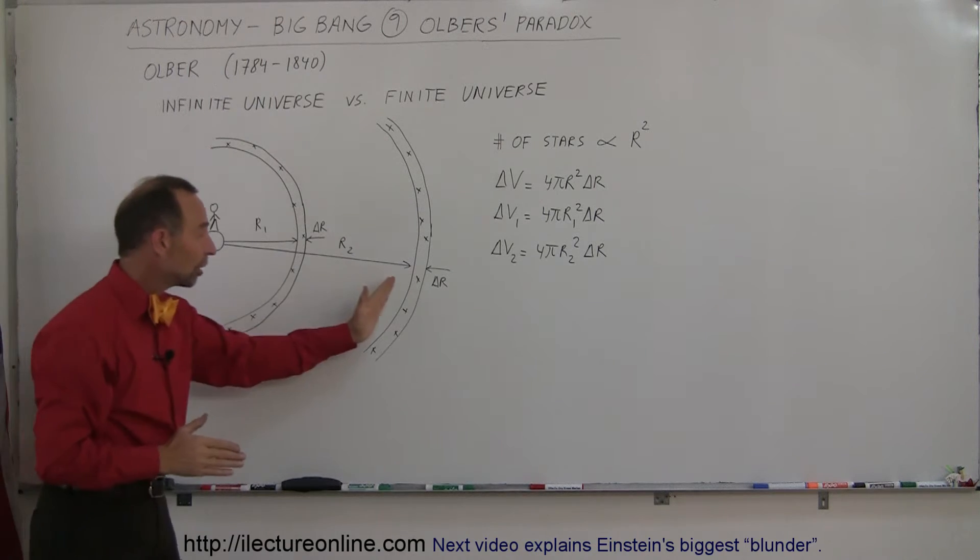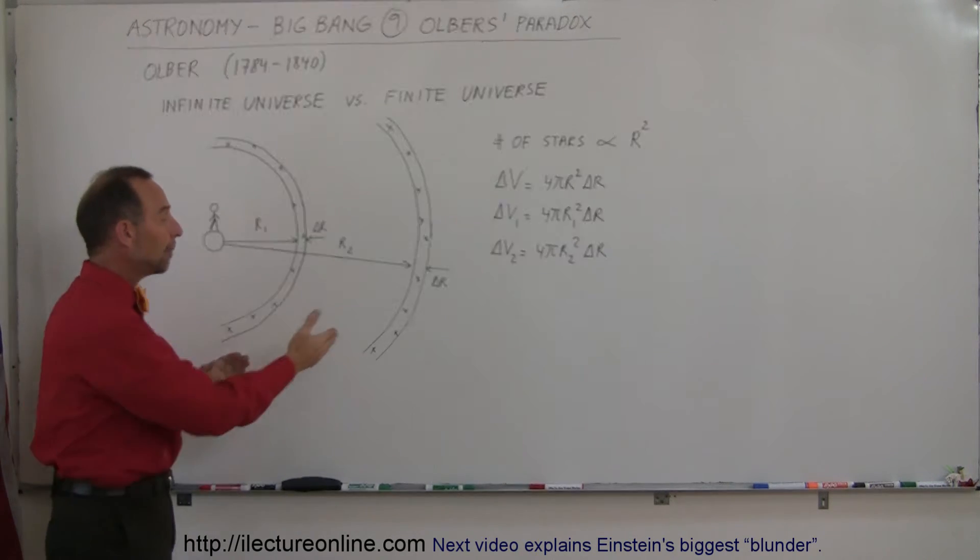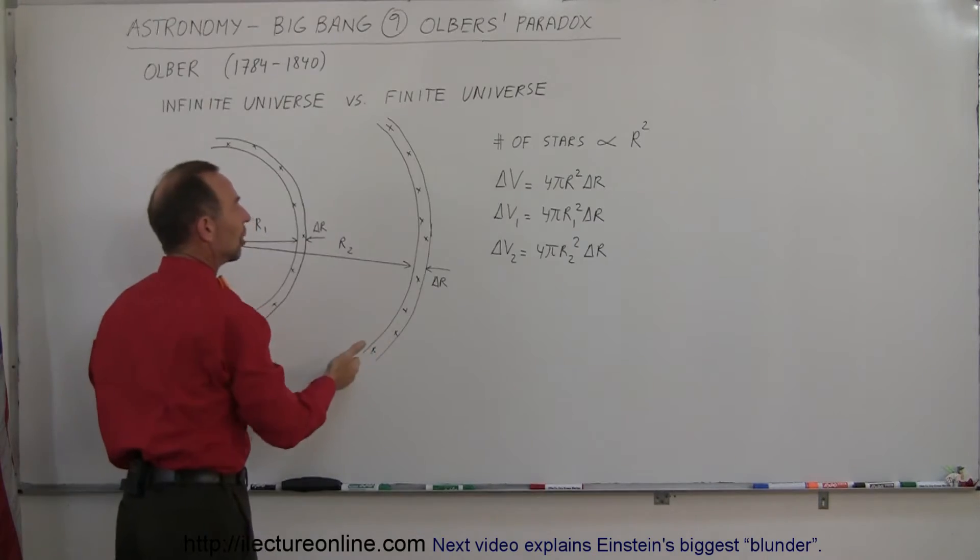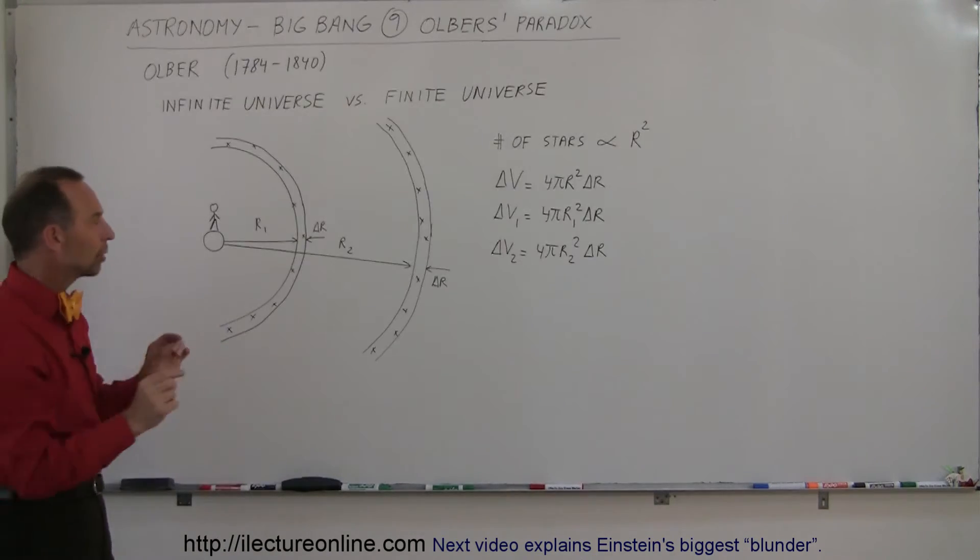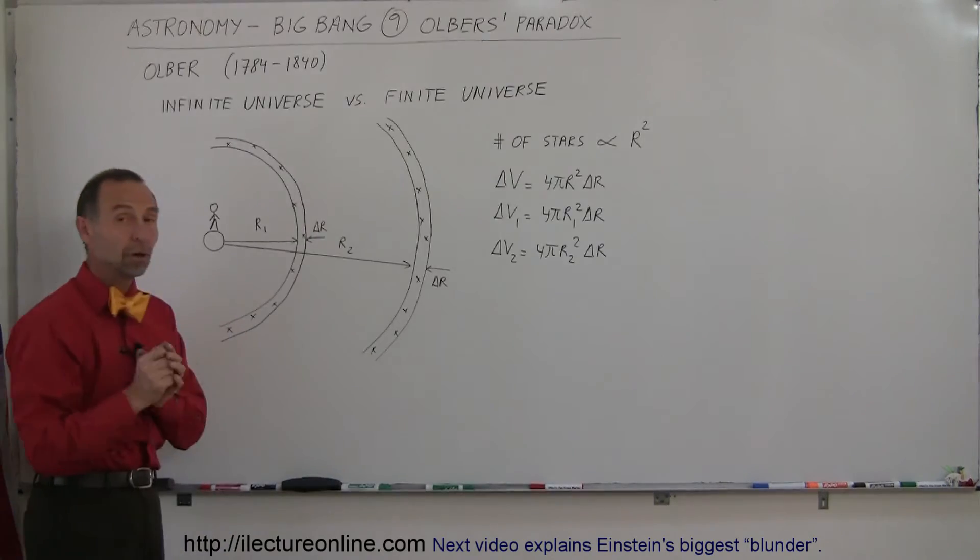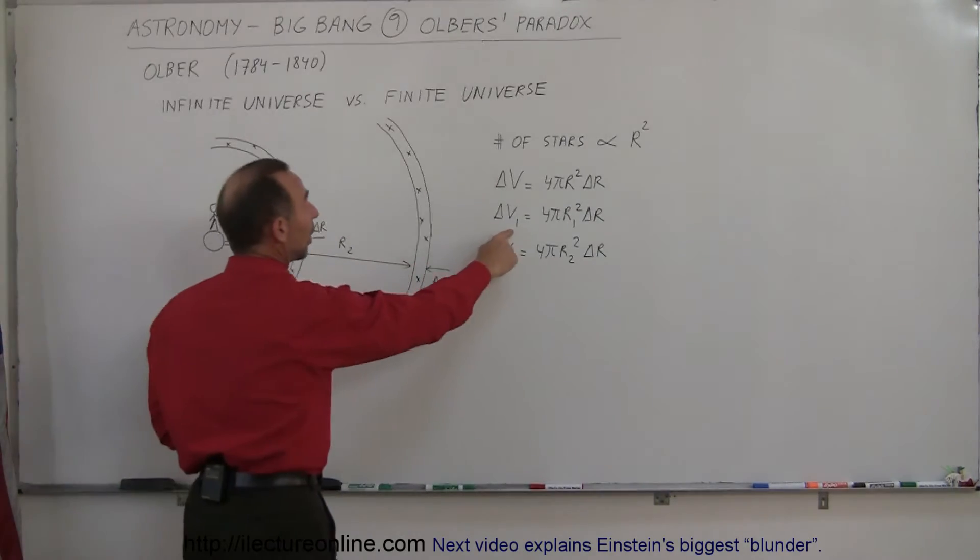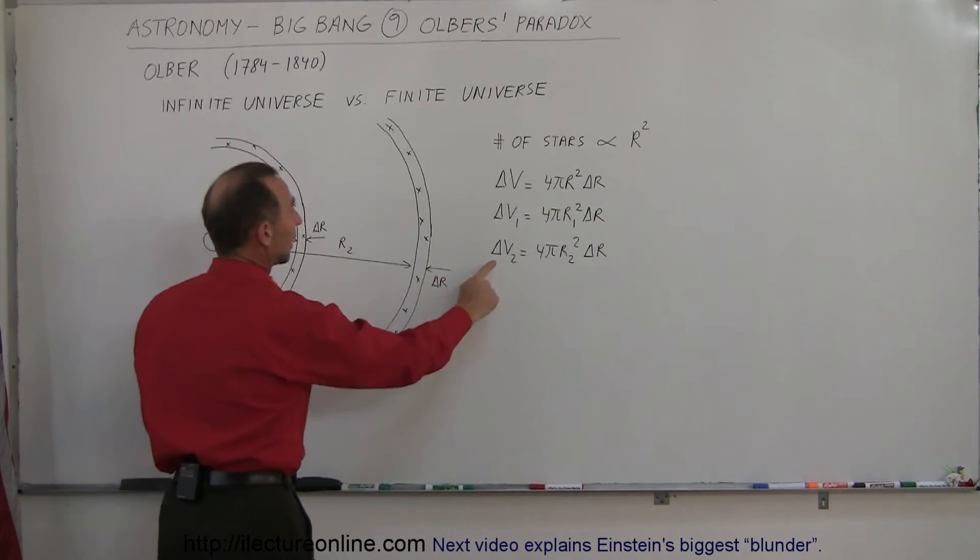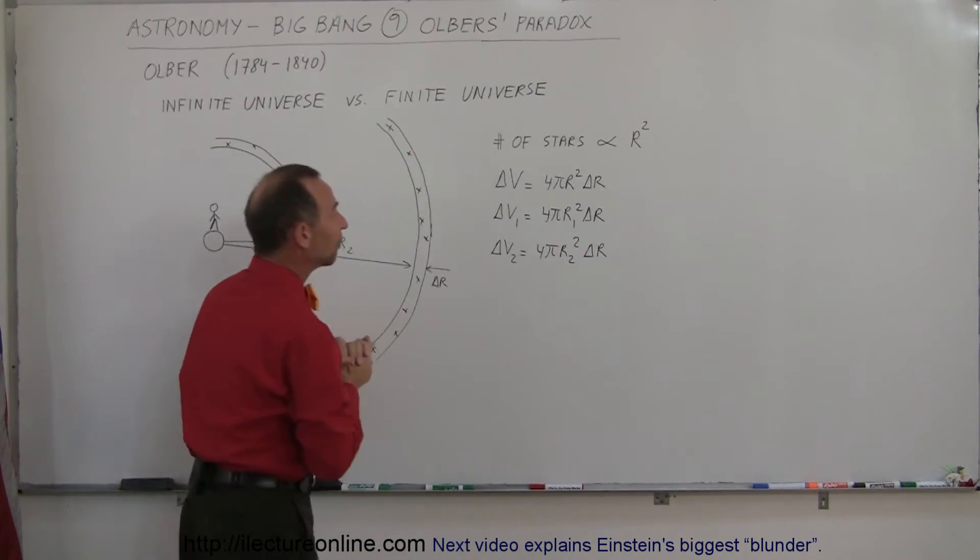Now we look at a second shell two billion light years away. How many stars would be in that second shell? Well, it would have to deal with the proportionality of how much volume is contained within those two shells. So ΔV₁ would be the volume of the first shell and ΔV₂ would be the volume of the second shell.